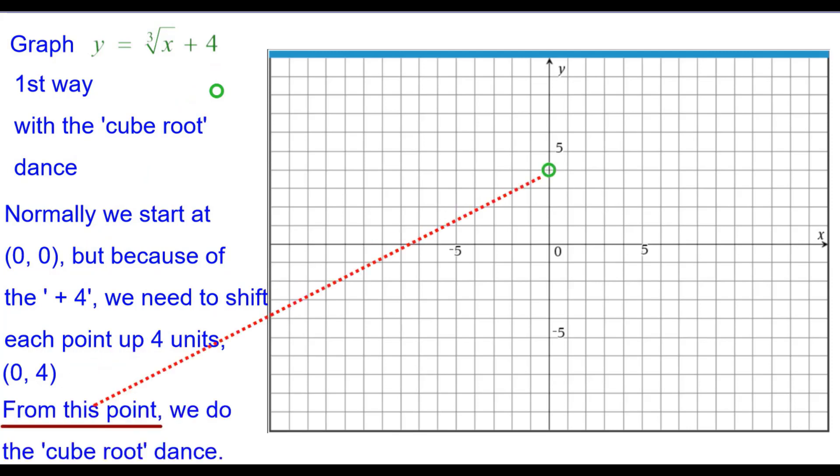And from this point we will do the cube root dance, which is right 1 up 1 because the cube root of 1 is 1. Right 8 up 2, the cube root of 8 is 2.